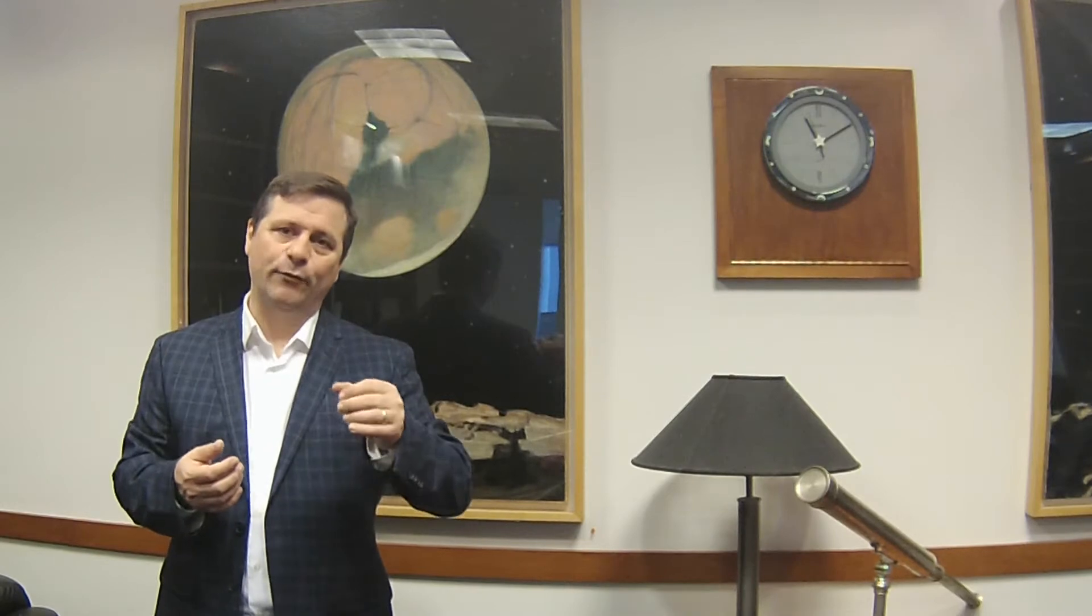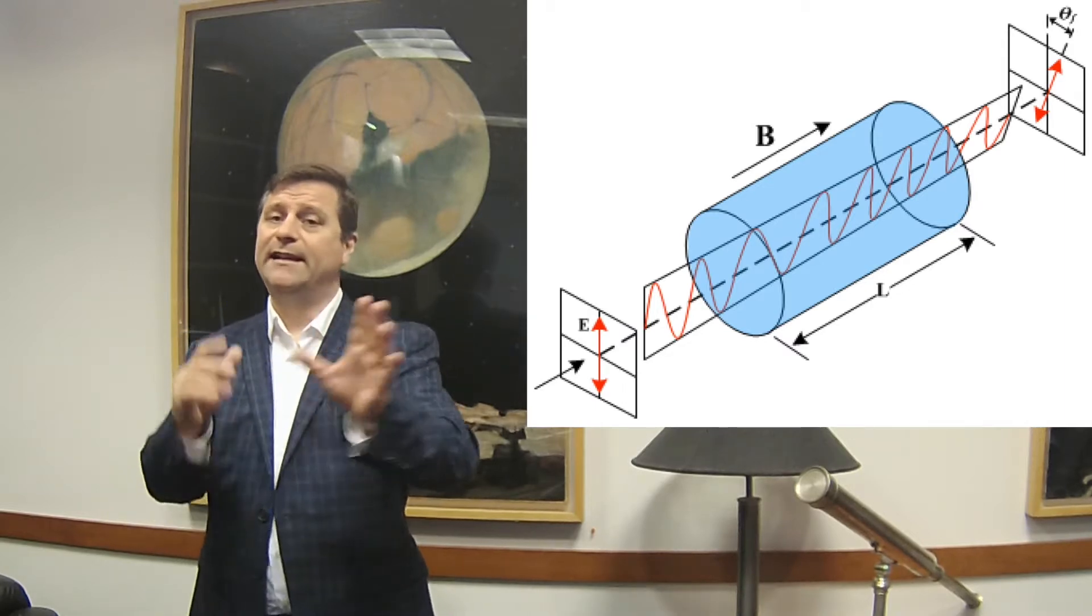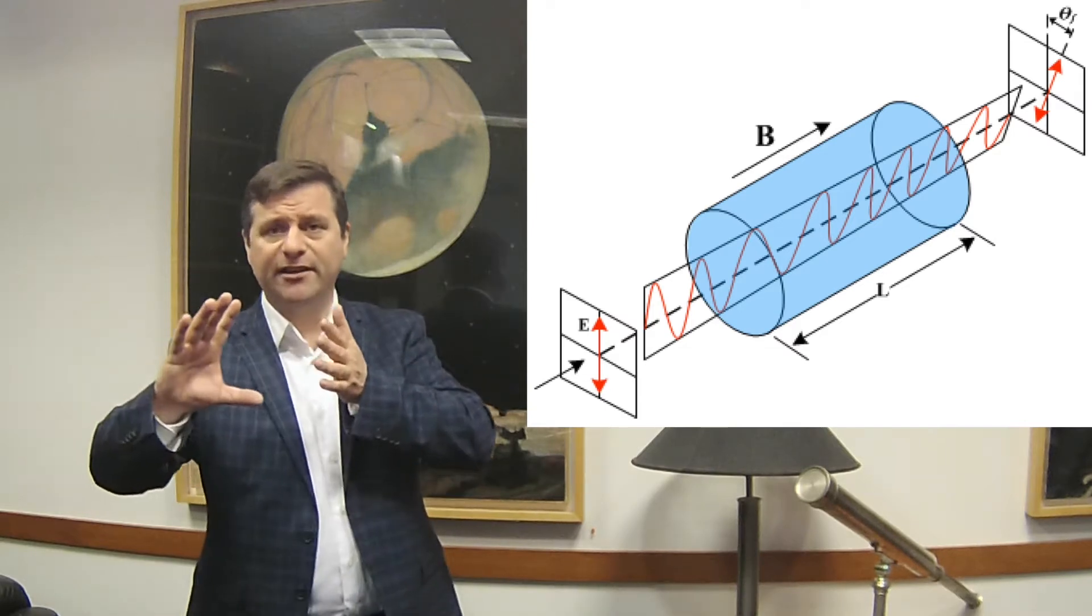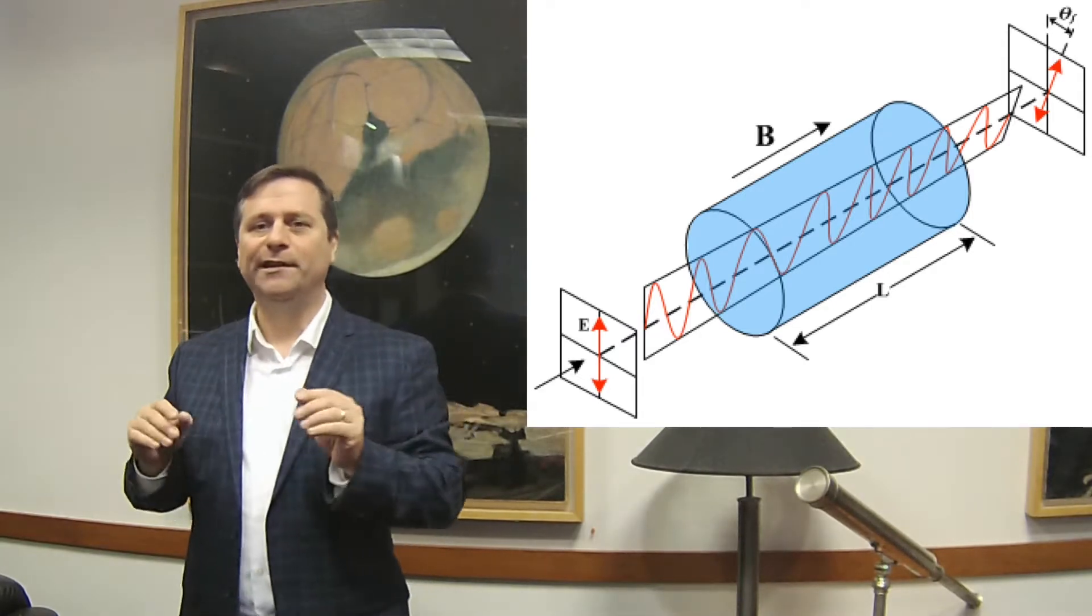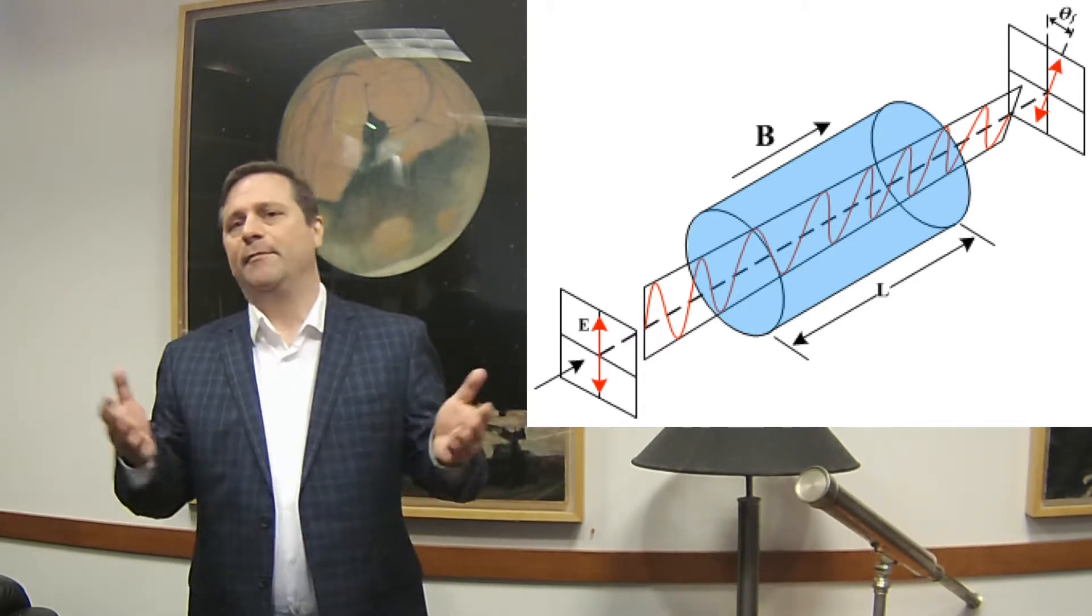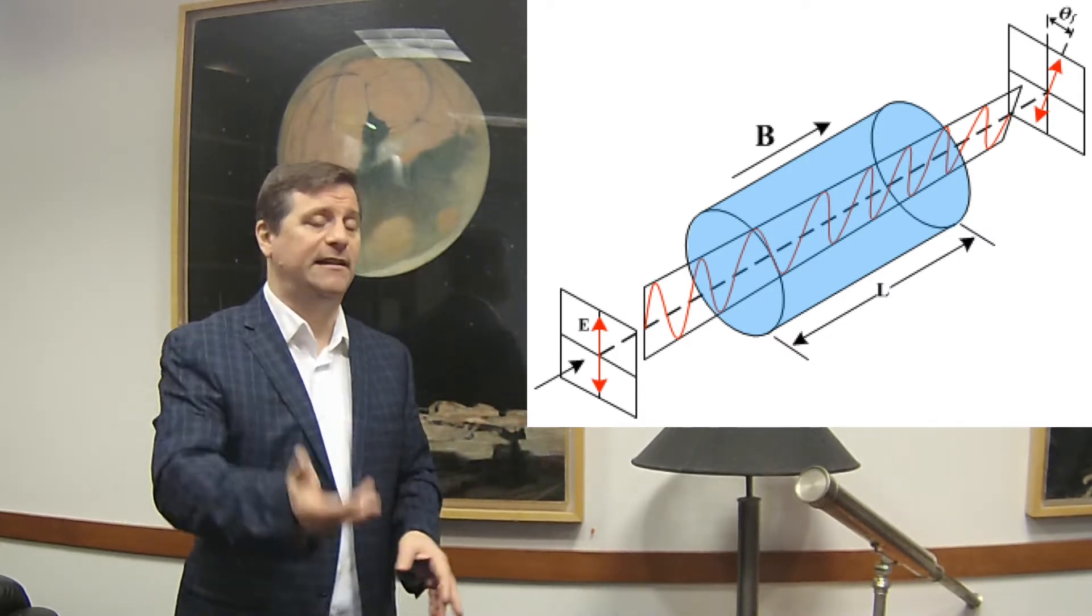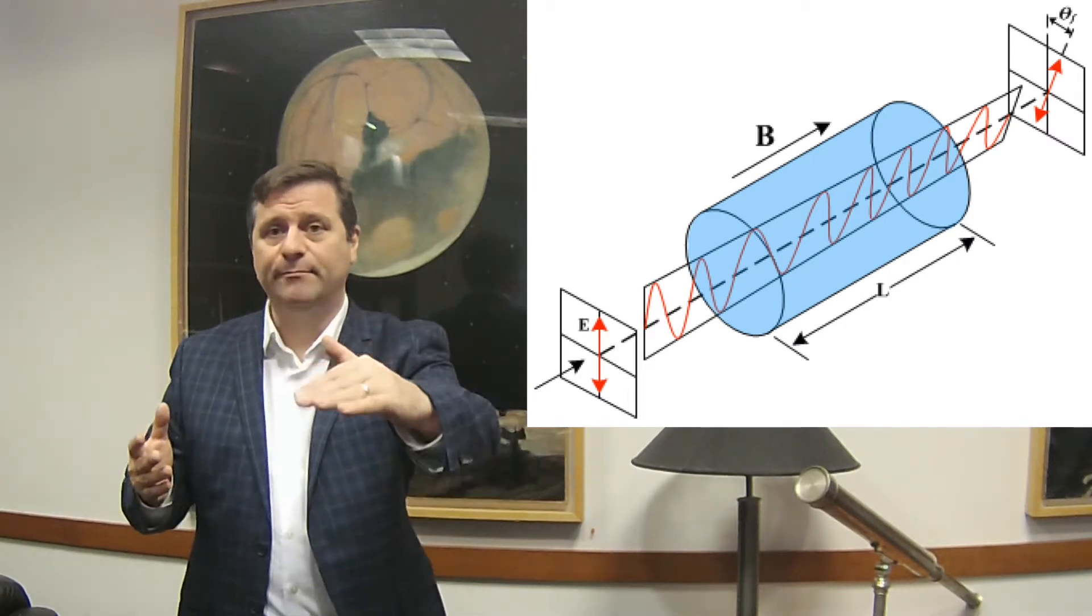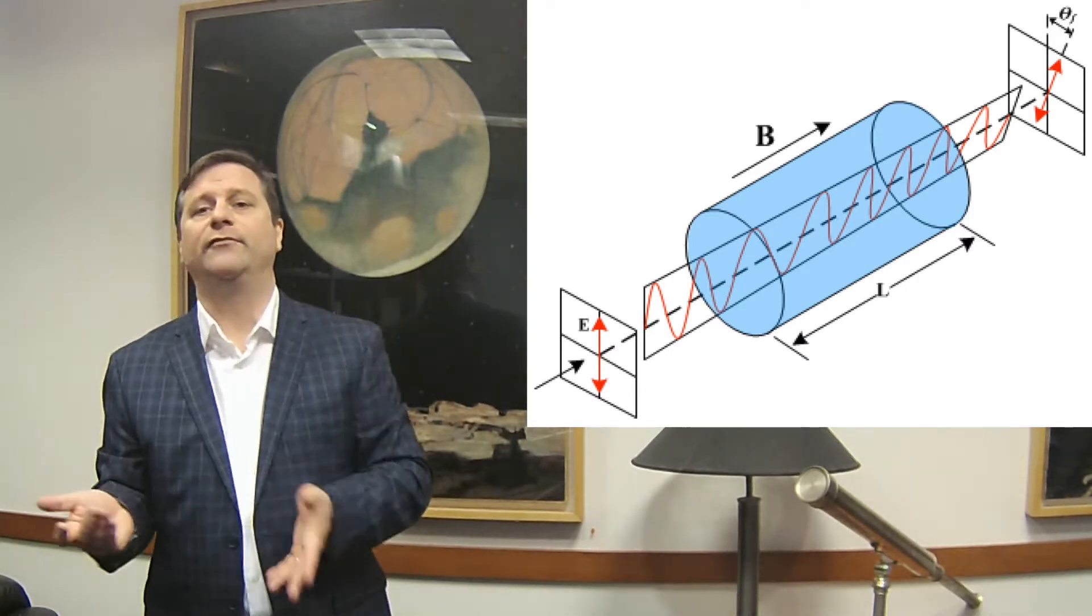In about 1845, about 14 years later, Faraday discovered that if you take polarized light and apply a strong magnet to it, the light can be rotated by the magnet. Faraday said there must be an enormous connection between electric fields, magnetic fields, and light - because he could rotate a polarized beam of light by applying a magnet to it. This is called Faraday rotation, discovered in 1845.